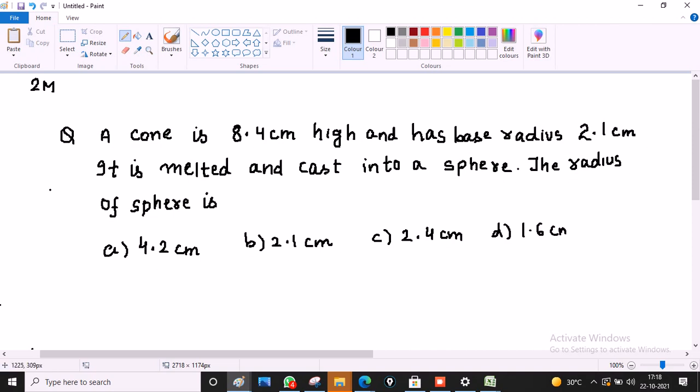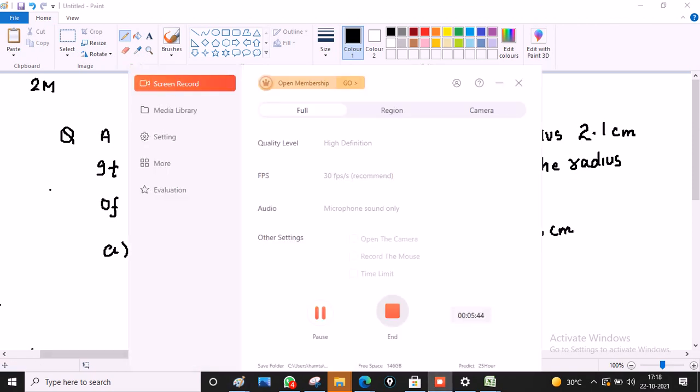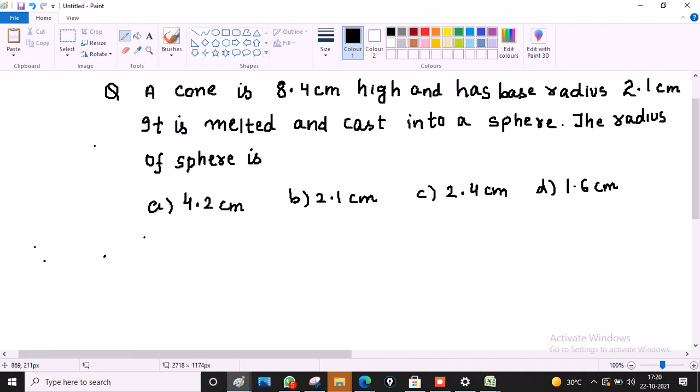A cone is melted and cast into a sphere, then volume of cone is equal to volume of sphere.